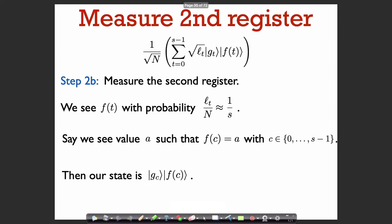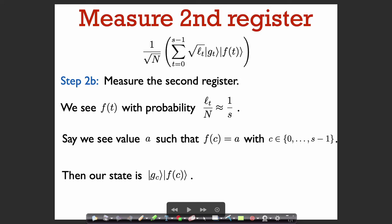As before, we measure the second register — this is not critical for the algorithm, it just makes analysis easier. We see f of t in the second register with probability l_t divided by n, which is approximately 1 divided by s. It doesn't matter that these probabilities are slightly different for different f of t values, because the algorithm is totally independent of what value we see in the second register. So let's say we see value a, and let c be such that f of c equals a — our state is then |g_c⟩ tensored with f of c.